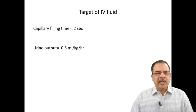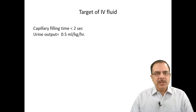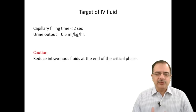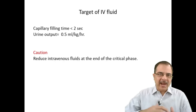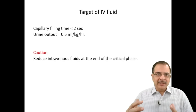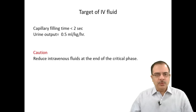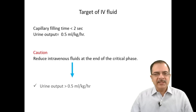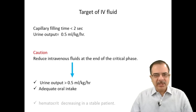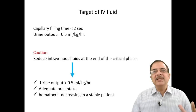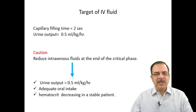The targets for IV fluid therapy are capillary filling time less than 2 seconds and urine output of approximately 0.5 ml/kg/hour or more. Importantly, reduce intravenous fluid at the end of the critical phase, as fluid returning to the intravascular space can cause pulmonary edema. End of critical phase is assessed by urine output greater than 0.5 ml/kg/hour, adequate oral intake, and a reducing hematocrit in a stable patient.